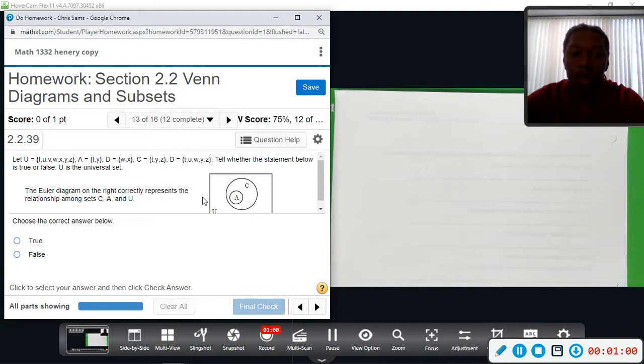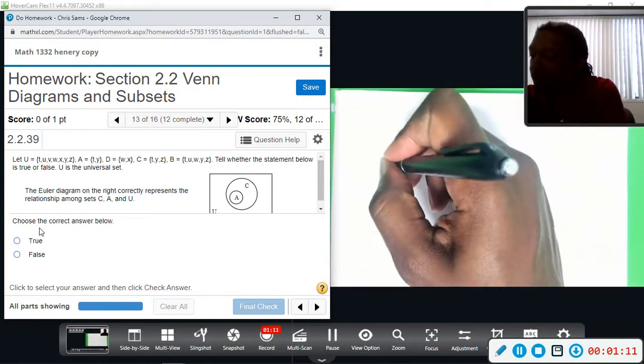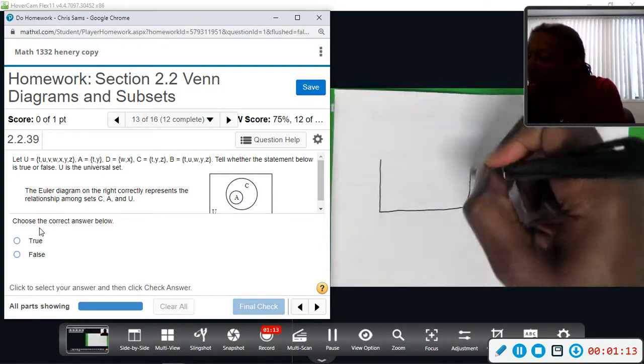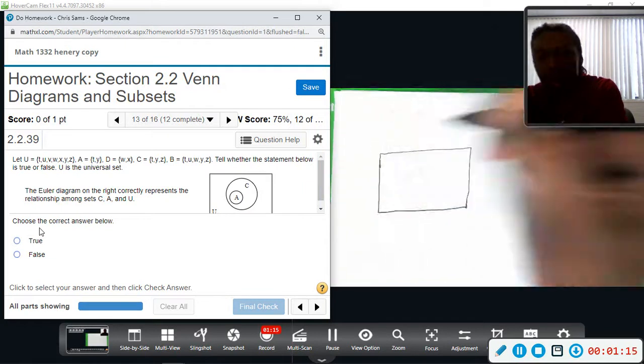Okay, so U is a universal set. Everything is in the universal set. That means {t, u, v, w, x, y, z}. Okay. And let's just draw this out.